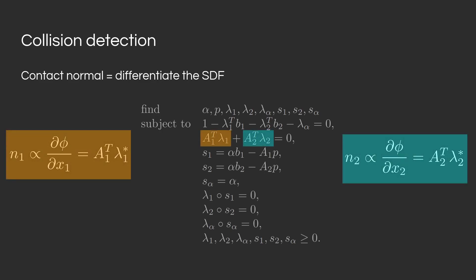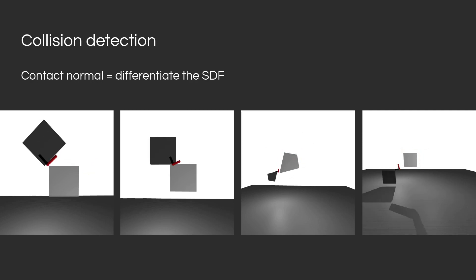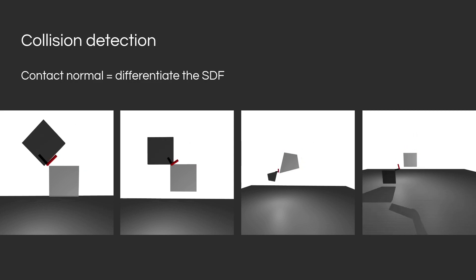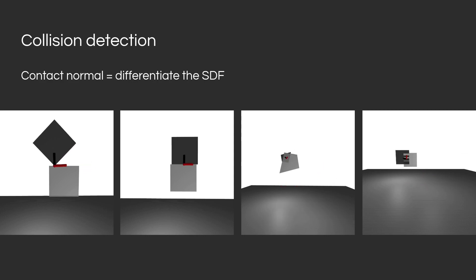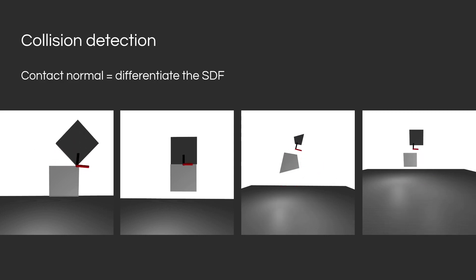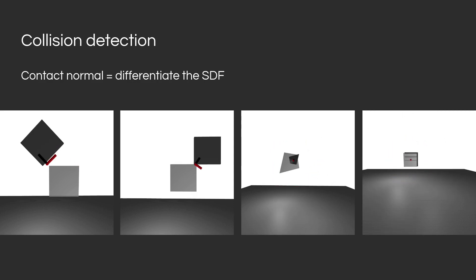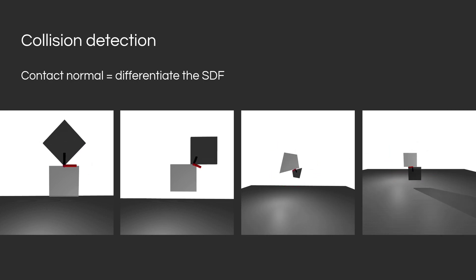Here we visualize the result of the optimization-based collision detection, showing the contact point location, the contact normal, and the contact tangent. The contact point location is well-defined when both objects are in contact, when they are separated, and when they are overlapping. The contact normal also points in the outward direction in all three cases, so even with overlap or no contact, the contact normal is well defined.